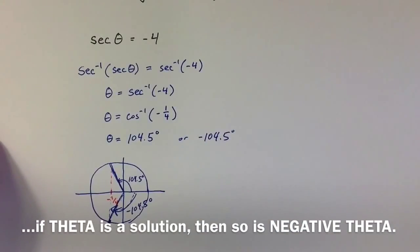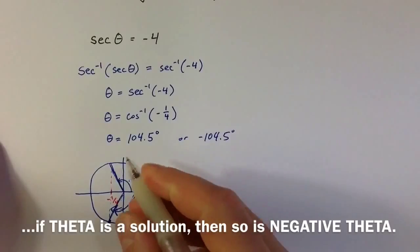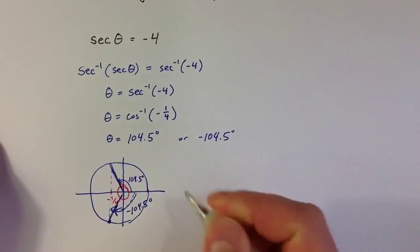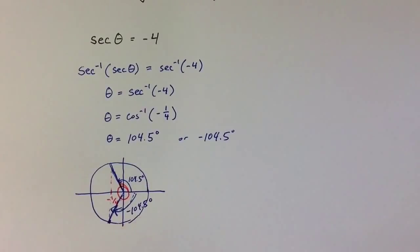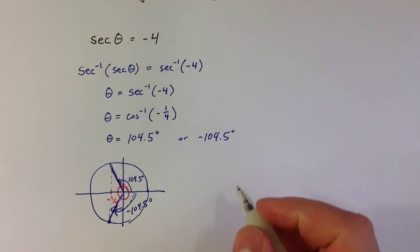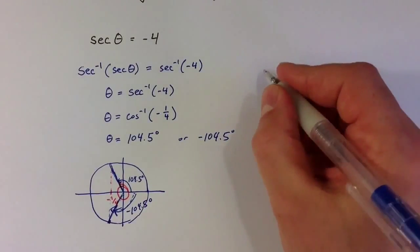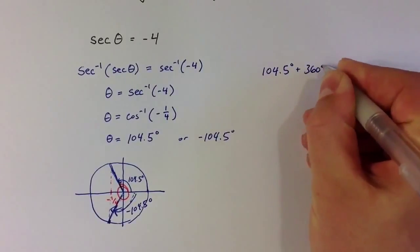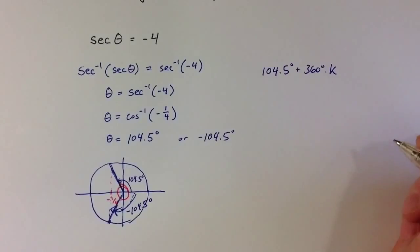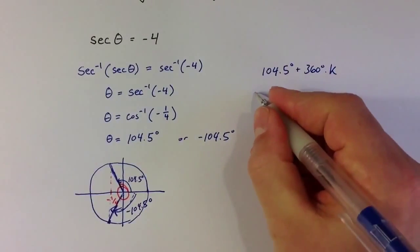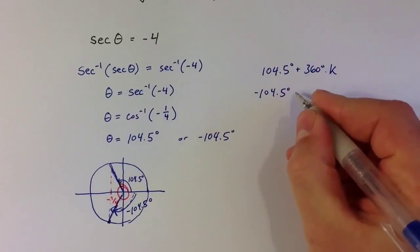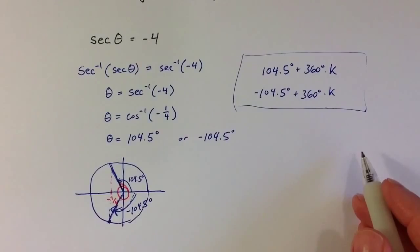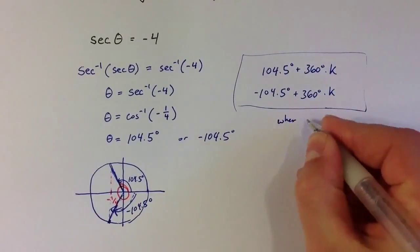In fact, there are an infinite number of solutions, because we can always add or take away a full rotation. Another solution would be 360 plus 104 degrees, or 360 plus negative 104 degrees. So we really have two sets of solutions: anything of the form 104 degrees plus 360 degrees times k, or negative 104.5 degrees plus 360 degrees times k, where k represents any integer.